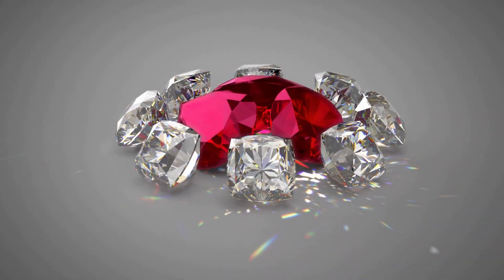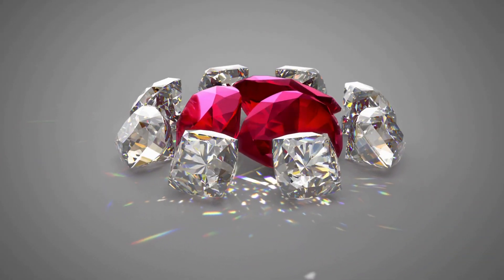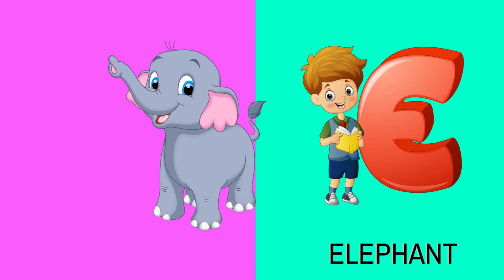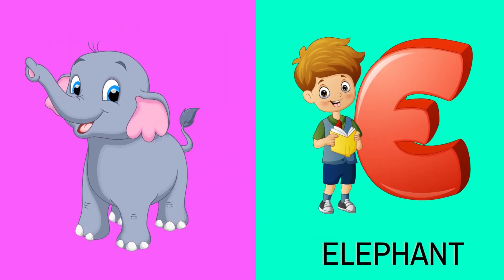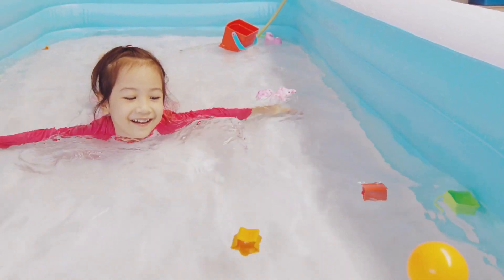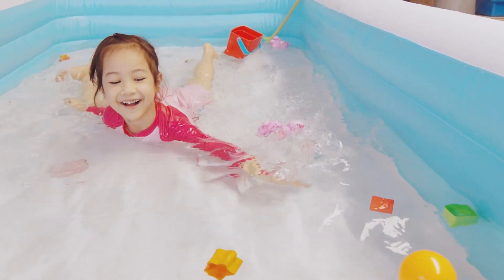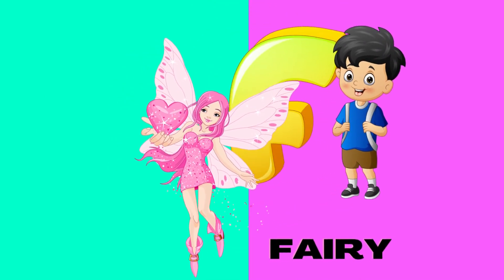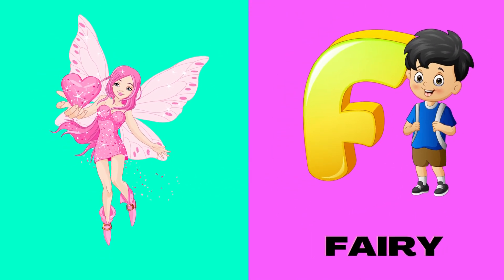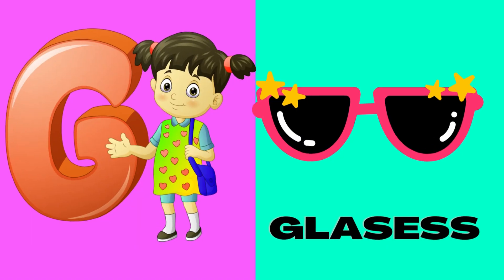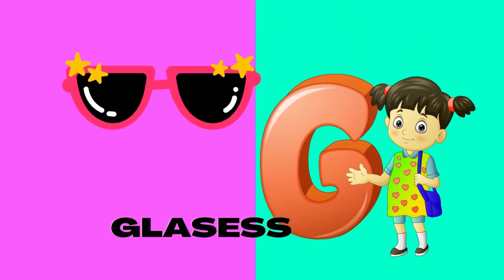E is for Elephant. E-Elephant, E-Elephant. Elephant. F is for Fairy. Fairy, Fairy, F-Fairy.